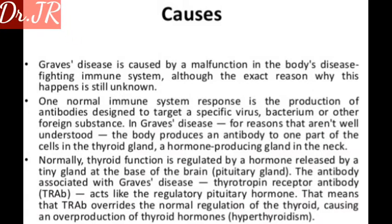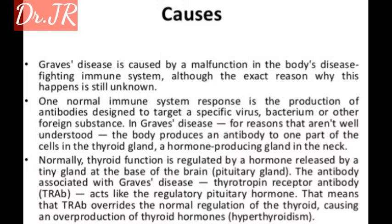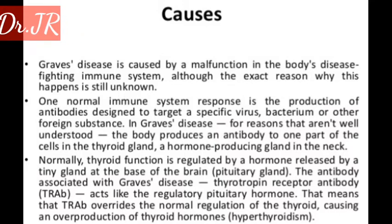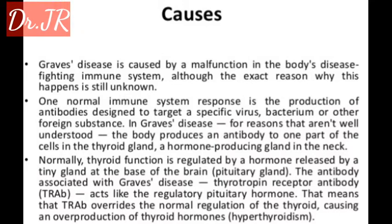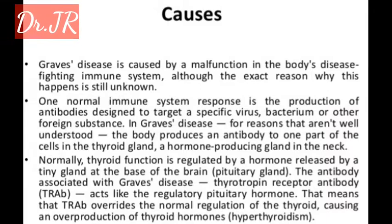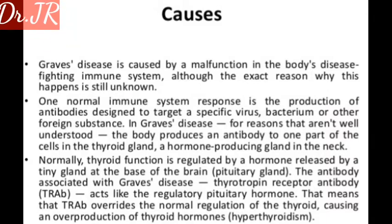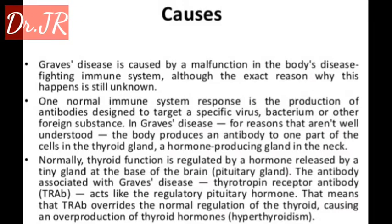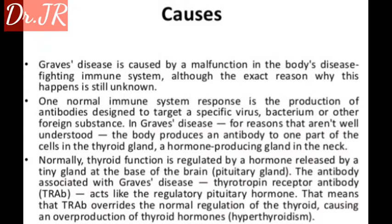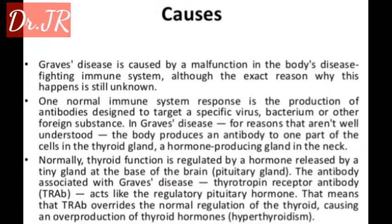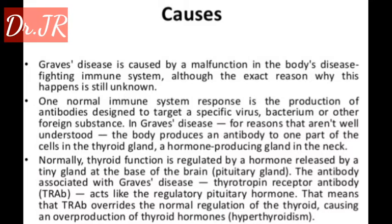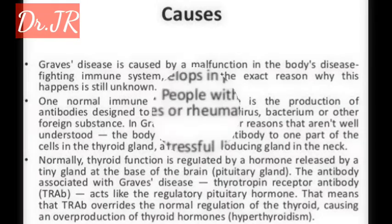Normally, thyroid function is regulated by a hormone released by a tiny gland at the base of the brain — the pituitary gland. The antibody associated with Graves' disease, the thyrotropin receptor antibody, acts like the regulatory pituitary hormone. This means that the thyrotropin receptor antibody overrides the normal regulation of the thyroid, causing an overproduction of thyroid hormones — hyperthyroidism.